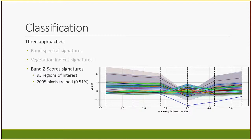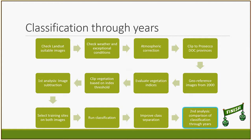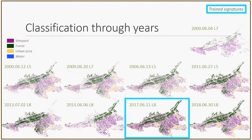It would be too time-consuming to select training sites from each image, so I took year 2017 as a reference, trained my signatures there, and ran the classification algorithms through all the other images. As a final step, I compared the classified images through the years and calculated the land cover surface area for each class. Here you see the classified images from 2000 to 2018: in purple the vineyards, green the forest, yellow the urban area, and blue the water. The classification is pretty consistent. Some images got fewer classified pixels, like for 4th June 2000 and 2015, and in all cases we got fewer classified pixels than in the 2017 image.